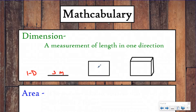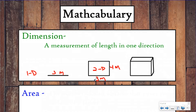A square is what we would call 2D. You might hear this term when talking about video games, or Flat Stanley — Flat Stanley is 2D. In other words it only has two dimensions you can measure: it has the length, which could be three, and then it has a width, which could be maybe four. Those are the two dimensions you can measure this figure with.